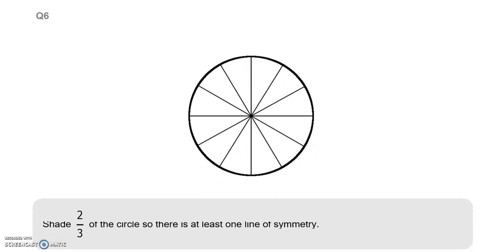Question six. Shade two thirds of the circle. So there is at least one line of symmetry. For two thirds, how many slices are there in total? One, two, three, four, five, six. And another six, so that's 12. Two thirds of 12. 12 divided by three is four. Two lots of four makes eight. So I'm going to need to color in eight of the slices.